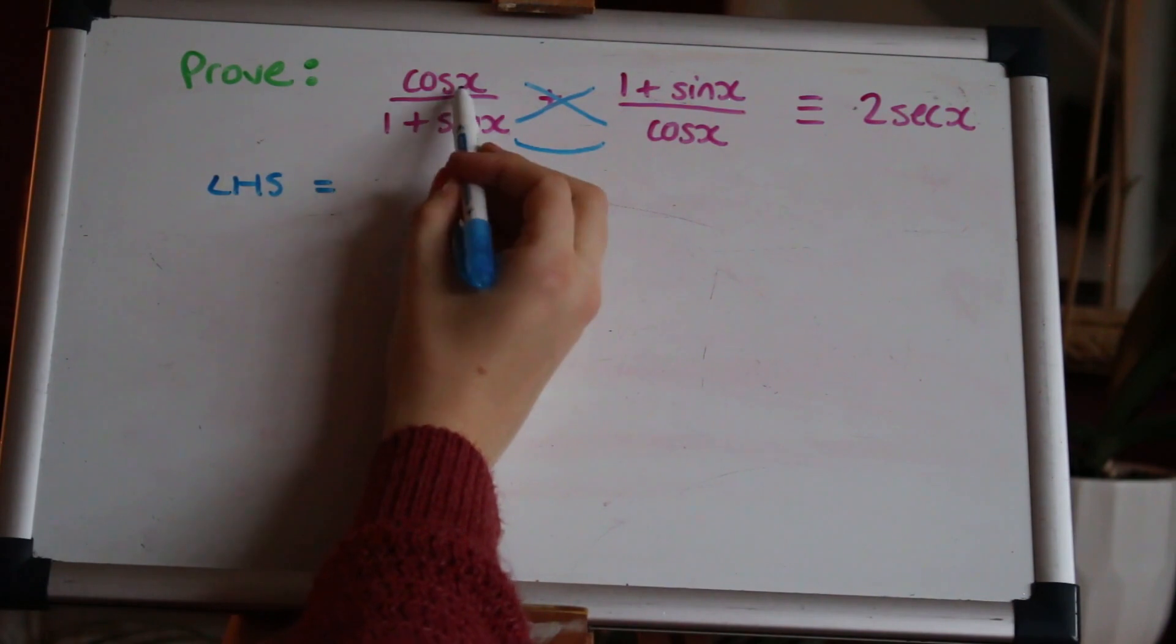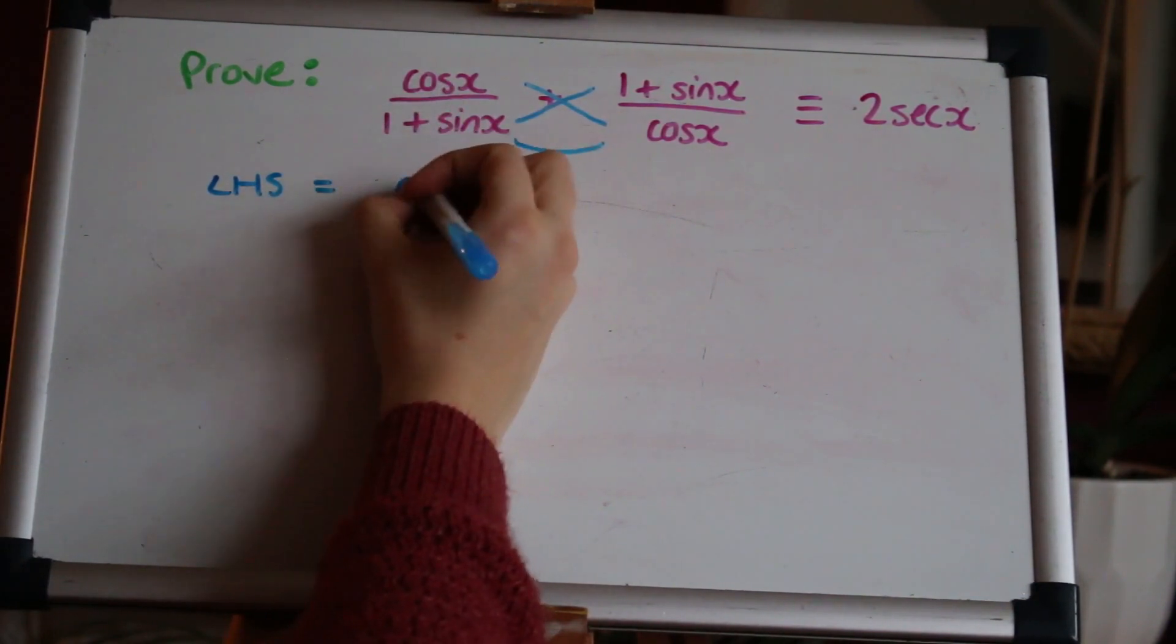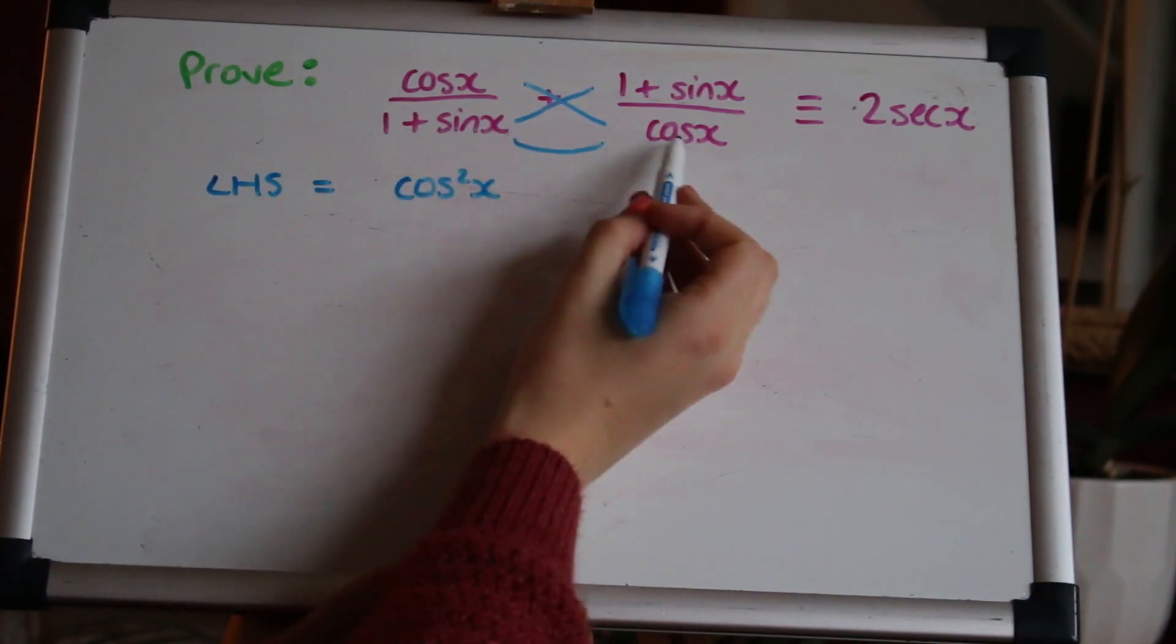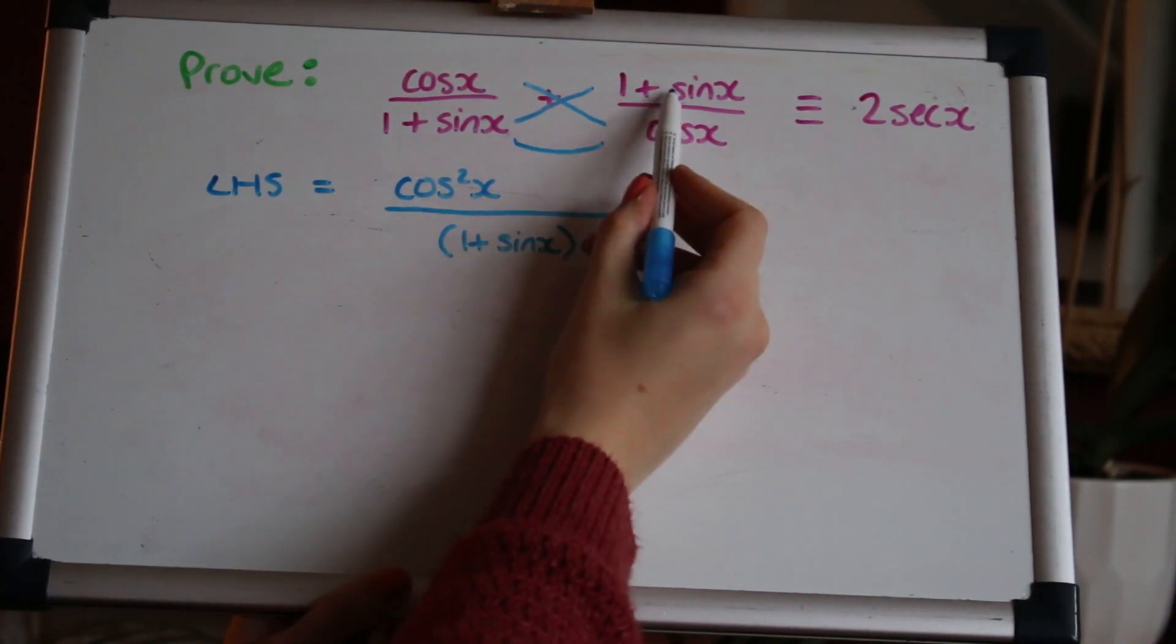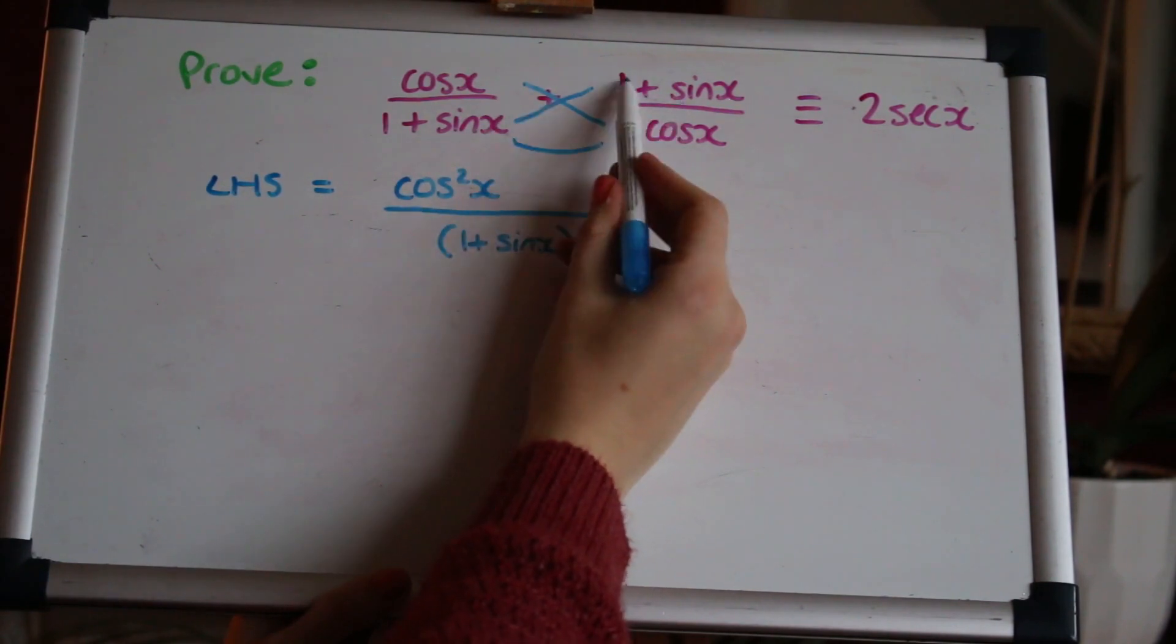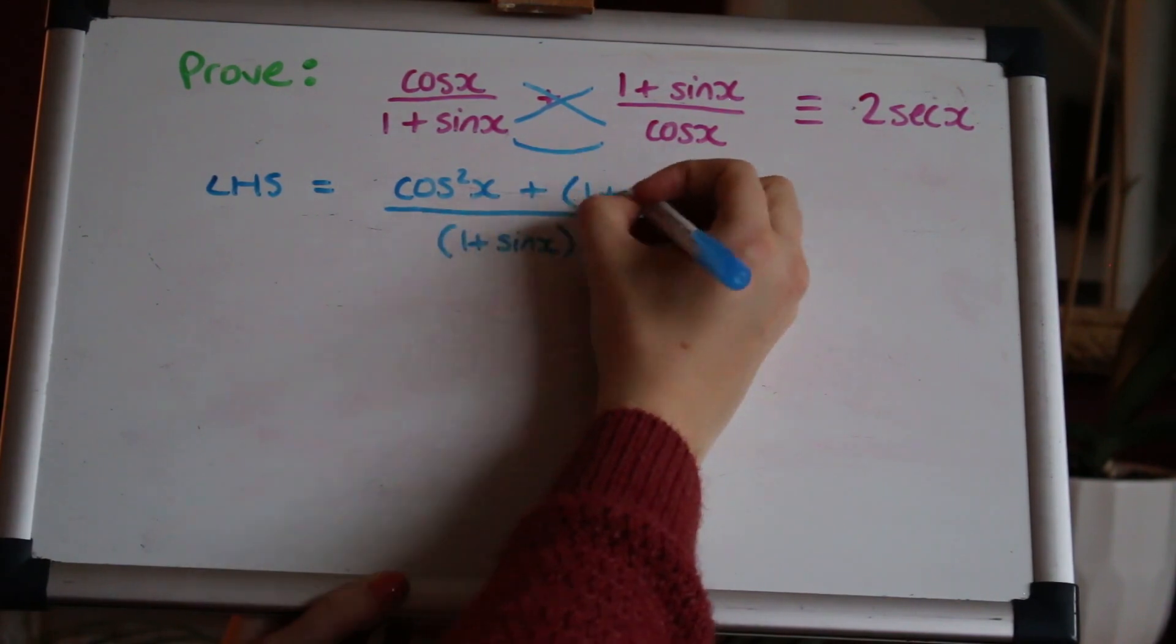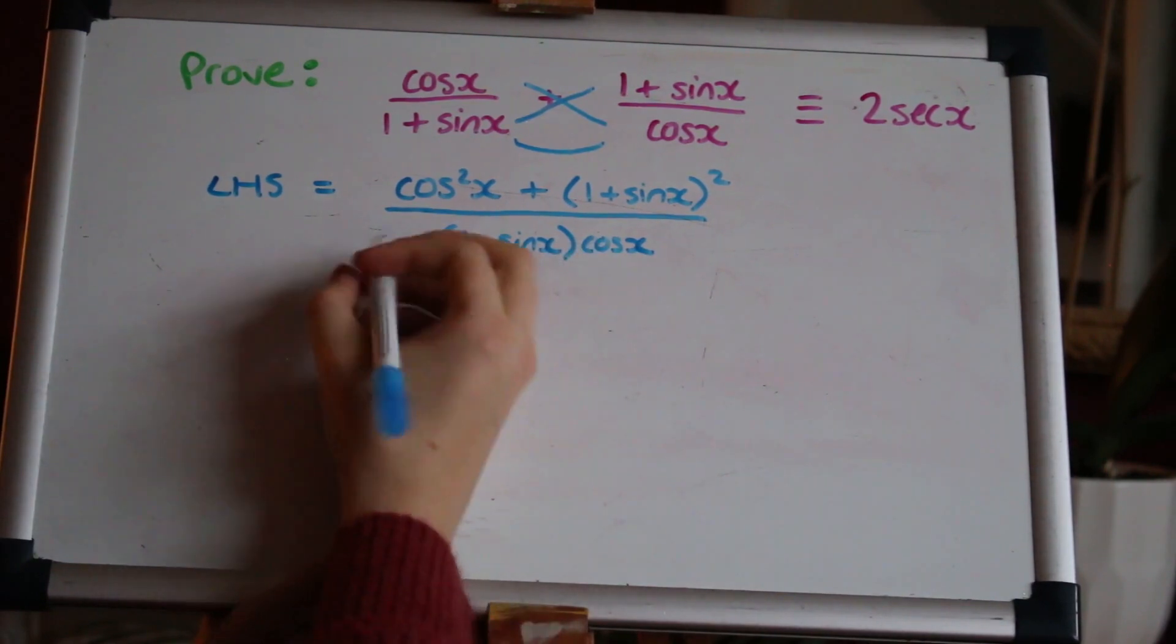So this fraction here we're going to times by cosx so cos times cos on the top will give us cos²x and on the bottom we'll have (1+sinx)(cosx). On this top here we're timesing this fraction by 1+sinx so we'll have all of (1+sinx)² over the common denominator (1+sinx)(cosx). Now we can expand this out and play around with it.